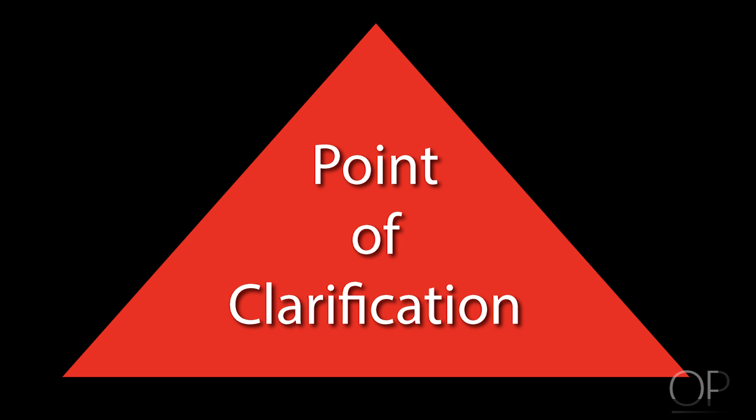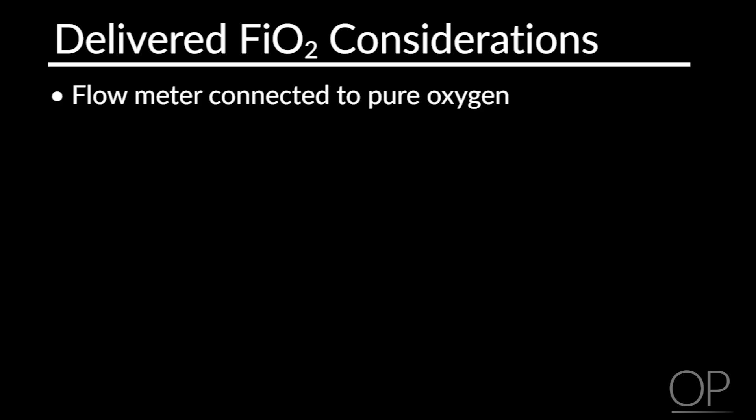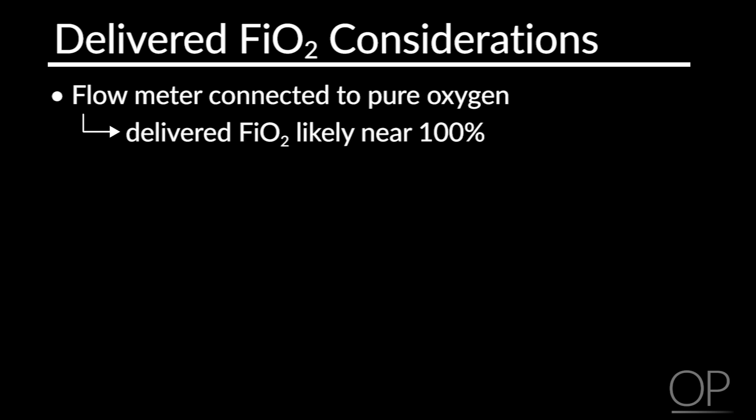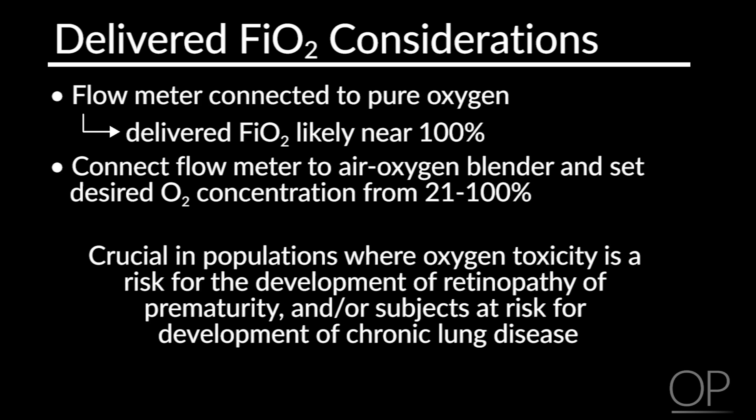Point of Clarification: It is important to consider the delivered FiO2 with this setup. If the flow meter is connected to a pure oxygen source, then the delivered FiO2 is likely to be near 100%. Ideally, the flow meter should be connected to an air-oxygen blender that enables the clinician to select the desired oxygen concentration from 21 to 100%. This is crucial in populations where oxygen toxicity is a risk, such as for the development of retinopathy of prematurity — especially in those born less than 31 weeks gestational age — or in subjects at risk for chronic lung disease.